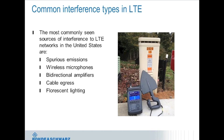Based on field work and conversations with network operators, there are five main categories of common interferers in LTE networks: spurious emissions, wireless microphones, bidirectional amplifiers, cable egress, and fluorescent lighting. Each will be discussed in detail with examples from actual LTE interference cases found in the field.